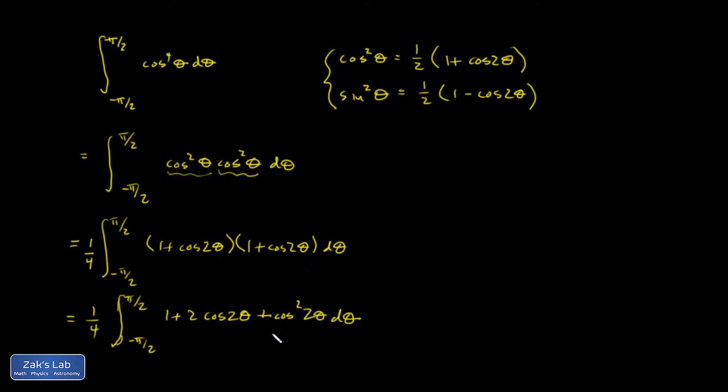On this one, I need to apply that half angle identity again to knock down the power of the cosine function there. So I have one-fourth integral negative pi over 2 to pi over 2. 1 plus 2 cosine 2 theta plus one-half times 1 plus cosine of twice this angle, which is 4 theta.